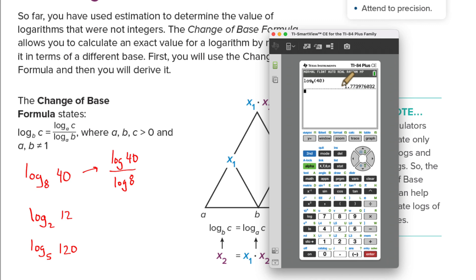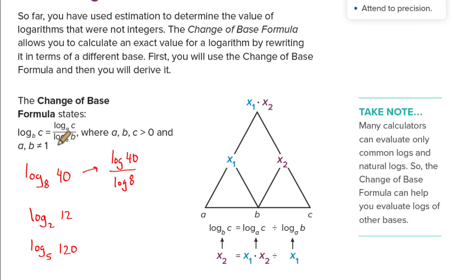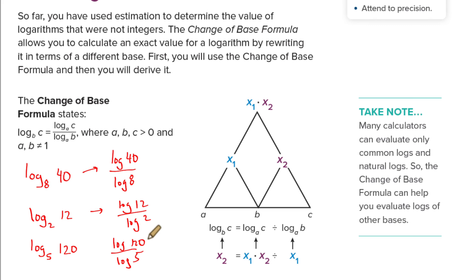We get log base 8 of 40 — the exponent used on 8 to get 40 is about 1.77. Now if I just say log of 40 divided by log of 8, I get 1.77 — shocker! This is the formula they used to use back in the olden times. We could also rewrite log base 2 of 12 as log of 12 over log of 2, and log base 5 of 120 as log of 120 over log of 5. That's the change of base formula. Our calculators now handle log base directly, which makes life a lot easier.